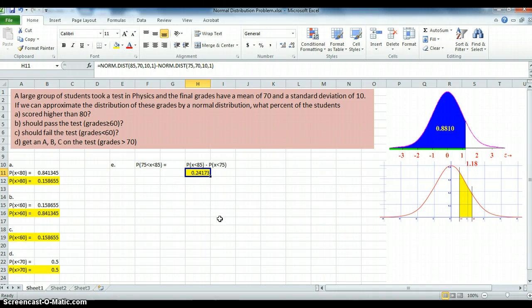24% of the people taking the exam will score between 75 and 85. Or the probability of one person taking the exam to score between 75 and 85 is 24%. Thank you very much.